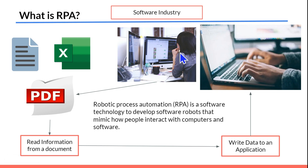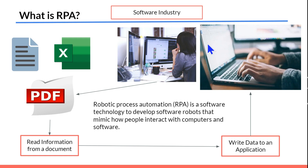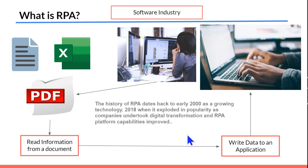Using UiPath, we can develop software robots that mimic how people interact with computers and software. Exactly how the person was reading the data and writing it to the application — the same thing can be developed using UiPath. A software robot is not a physical robot; it is an application inside the computer. The moment she clicks on it, it will automatically do the job — the robot will handle the entire copy-paste process. That is known as robotic process automation.